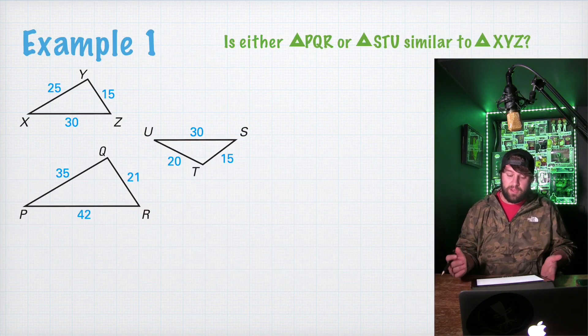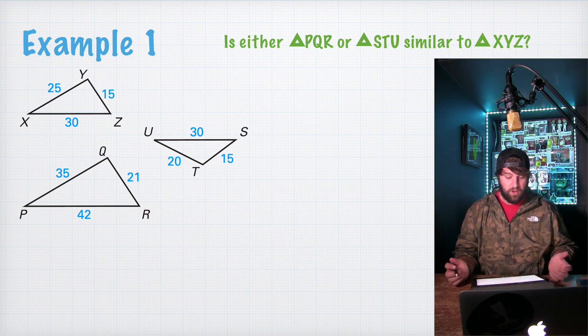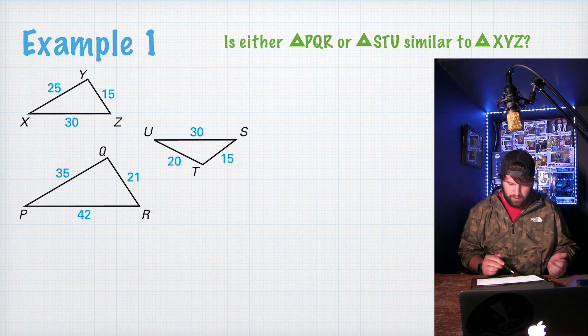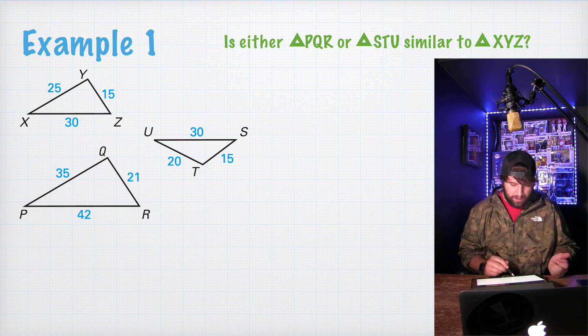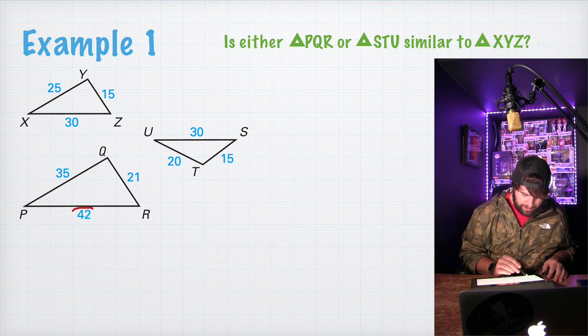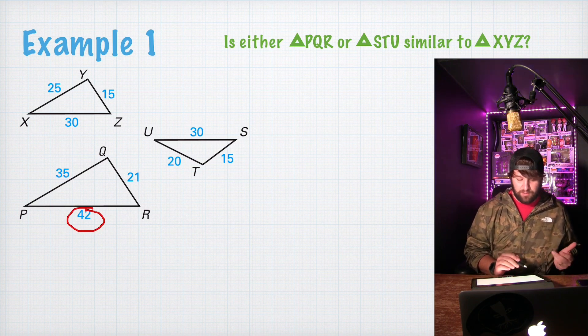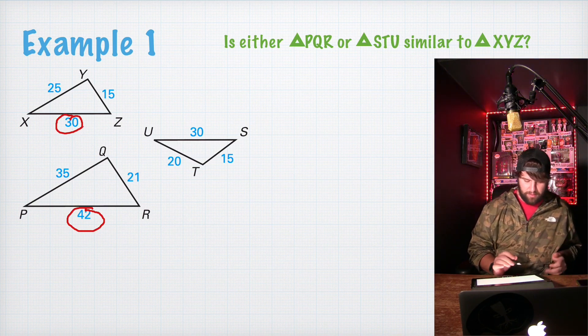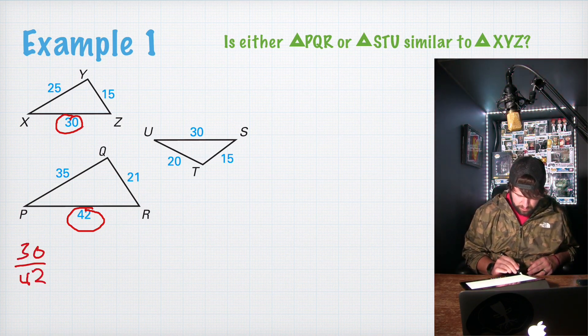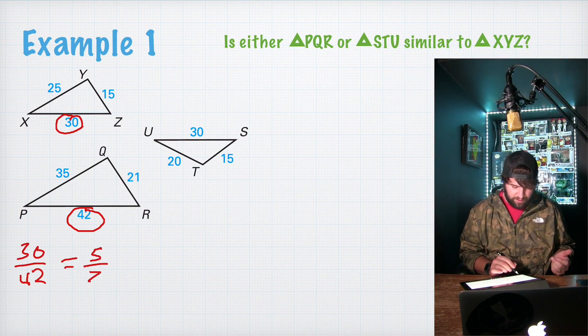Is either triangle PQR or triangle STU similar to XYZ? To do that, we just have to compare the sides. So, what I like to do, let's go ahead and start with PQR. I like to pick the largest side. So PR is the largest side of that triangle, and the largest side of XYZ is 30. So we can write 30 over 42. Both of those are divisible by 6 to equal 5 over 7.